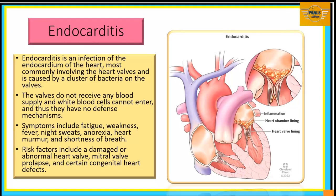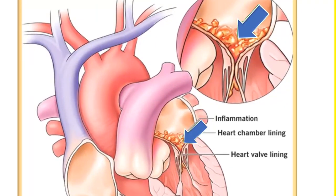We'll look at endocarditis — inflammation of the endocardium resulting from infection, most commonly involving the heart valves. It is caused by clusters of bacteria on the valves. The valves do not receive direct blood supply and white blood cells cannot enter, so there is no defense mechanism offered by white blood cells. Symptoms include fatigue, weakness, fever, night sweats, anorexia, heart murmur, and shortness of breath. Risk factors include damaged or abnormal heart valves, mitral valve prolapse, and certain congenital heart defects.